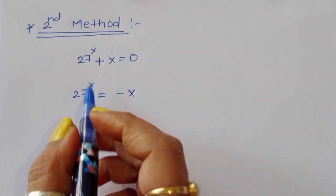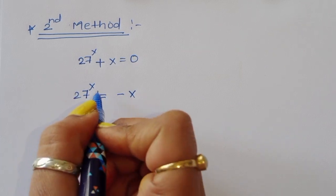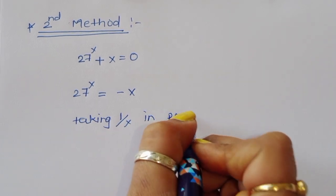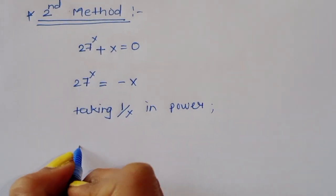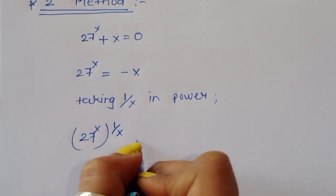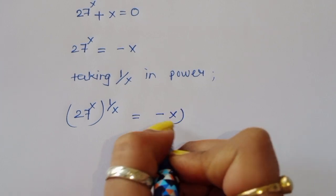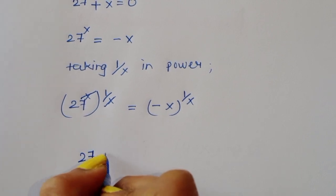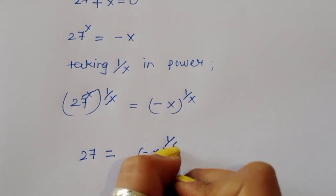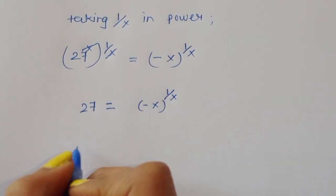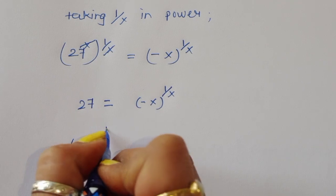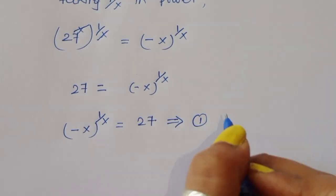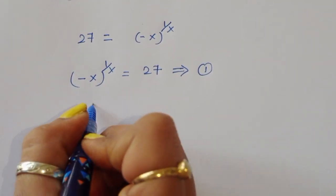Now for the second method. From the equation minus x power (1/x) equals 27, we raise both sides to the power 1/x. Then 27 power x to the power 1/x equals minus x to the power 1/x. The x's cancel, giving 27 equals minus x to the power 1/x.